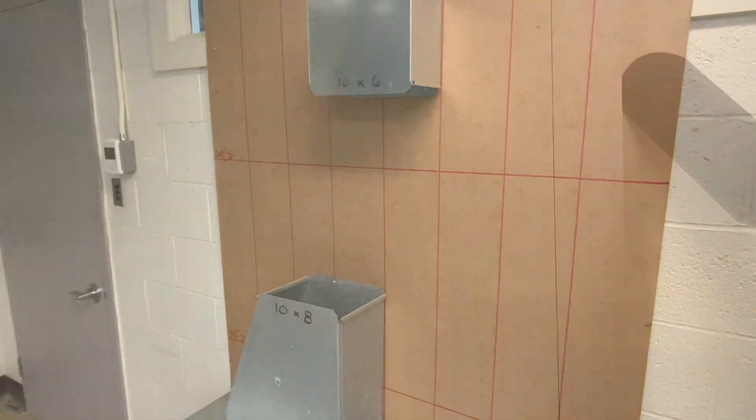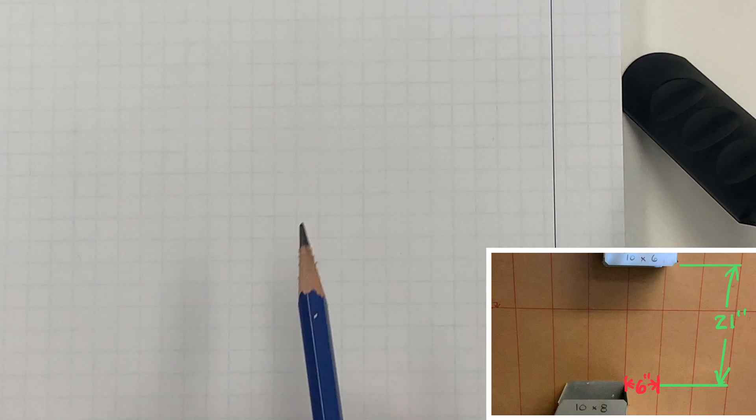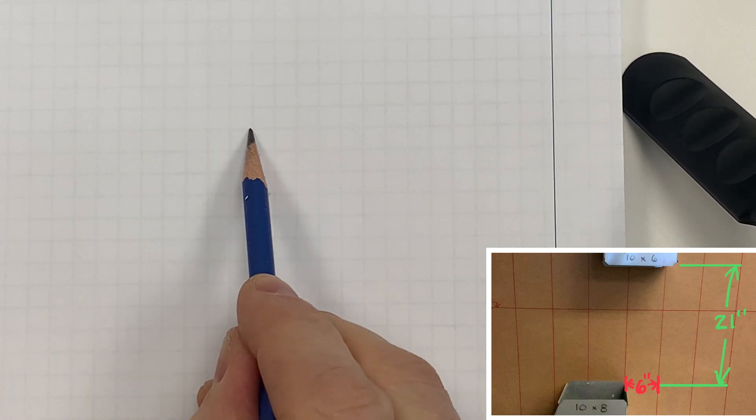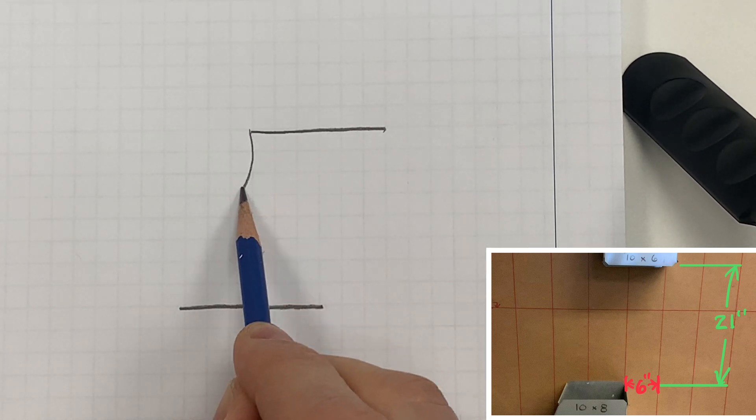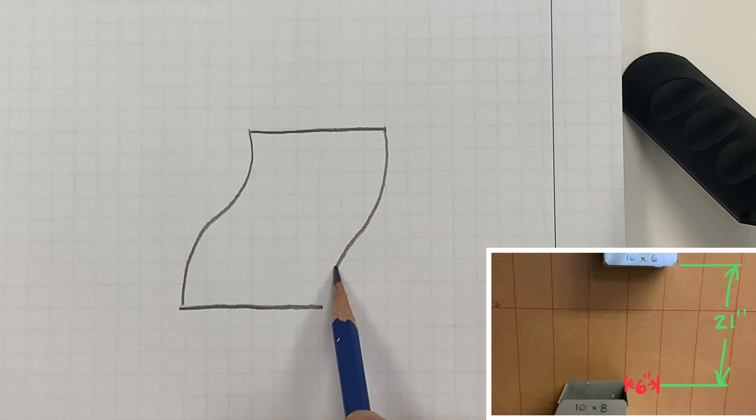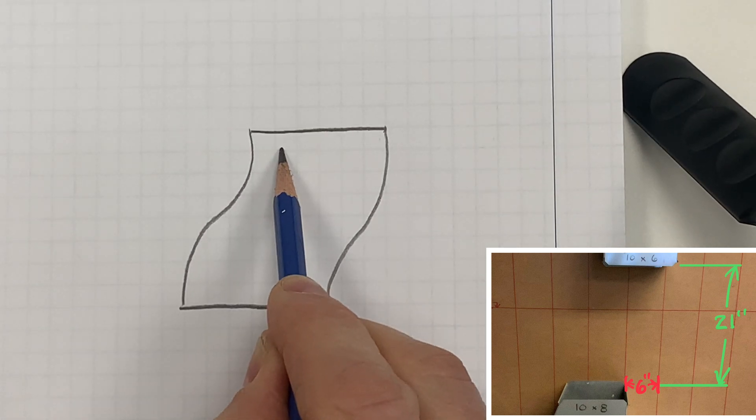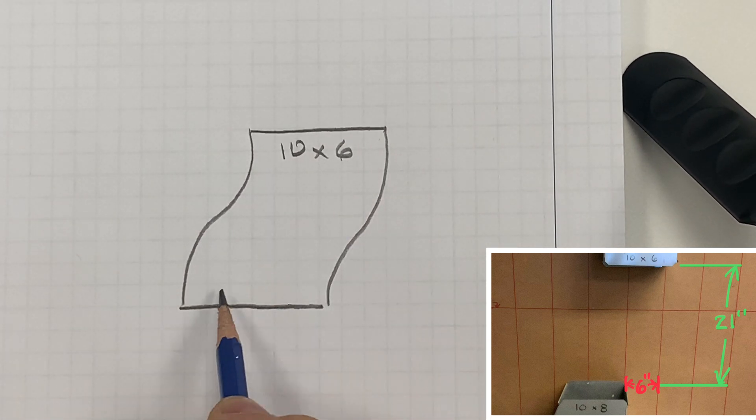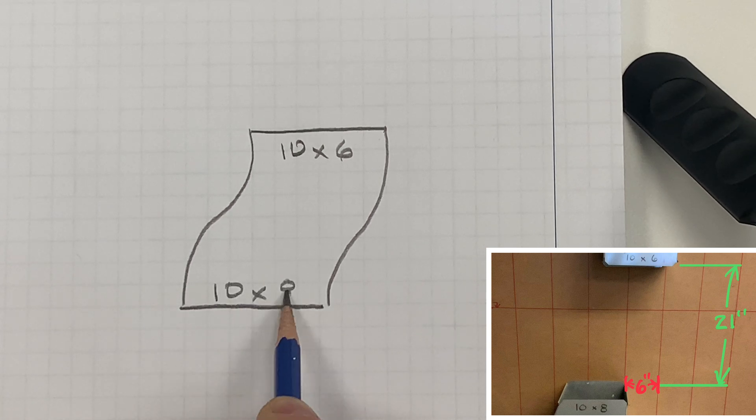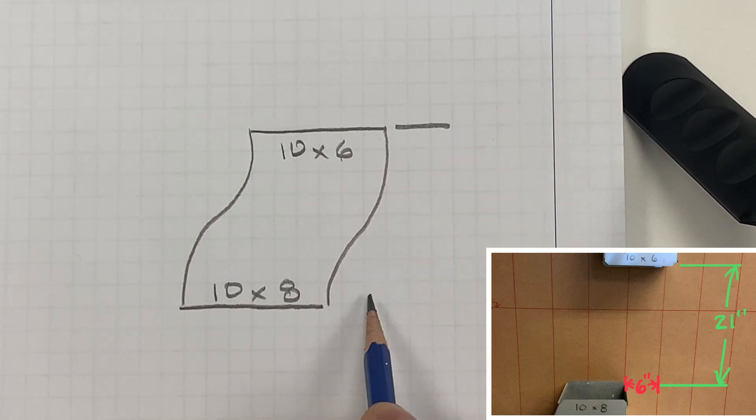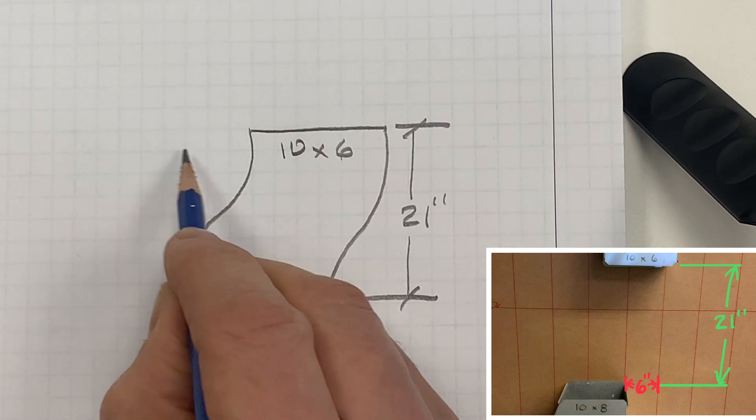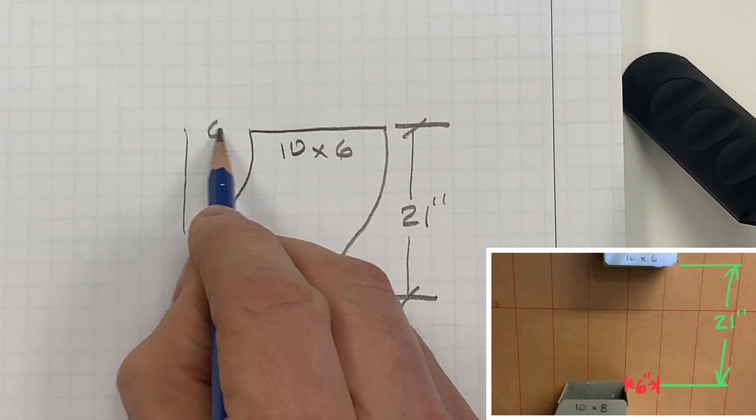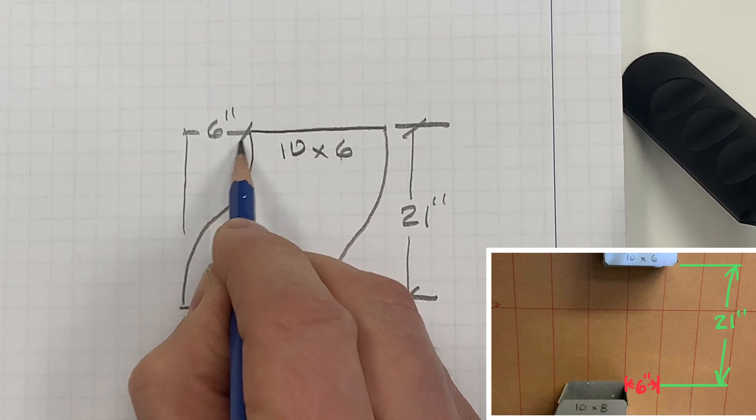This is going to be the first scenario. I'm going to sketch the missing piece which is going to be an offset. So grab a piece of paper and roughly sketch what an offset should look like. Then add the duct dimensions: 10 by 6 and 10 by 8. This offset is going to be 21 inches long and offsetting 6 inches.